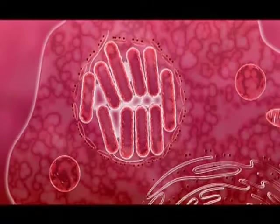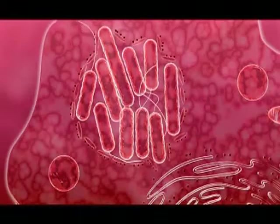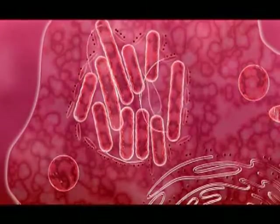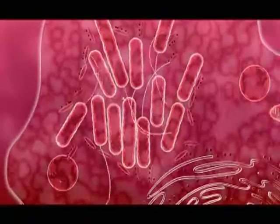Once Legionella is inside an ER vesicle, it is hidden from lysosomes. Now that Legionella cannot be destroyed by lysosomal attack, it multiplies freely within the ER-like phagosome.